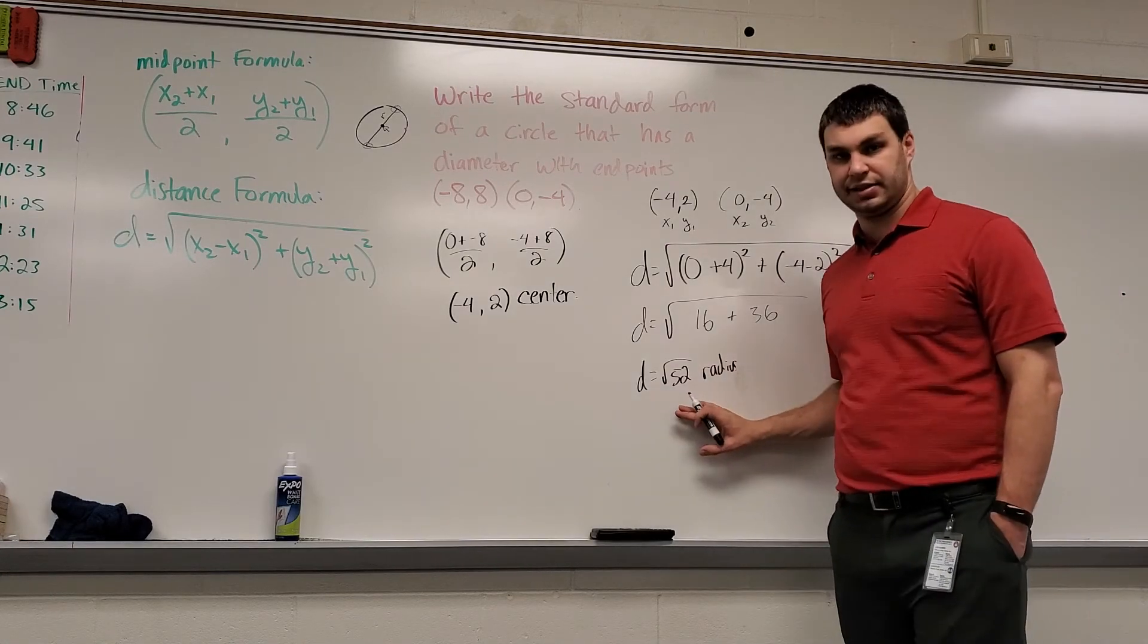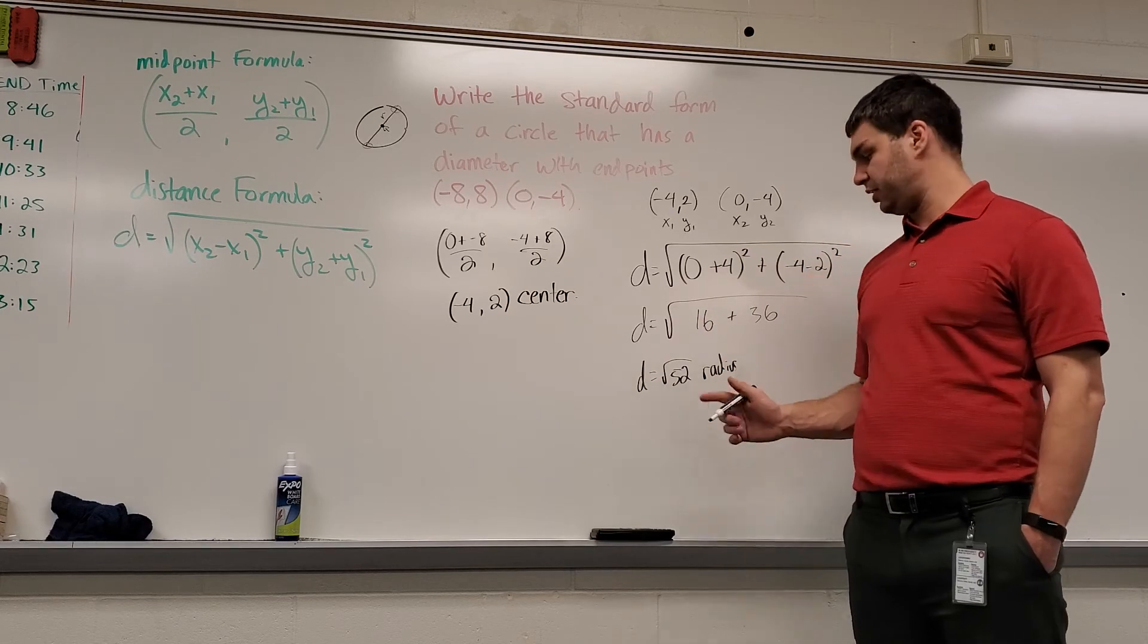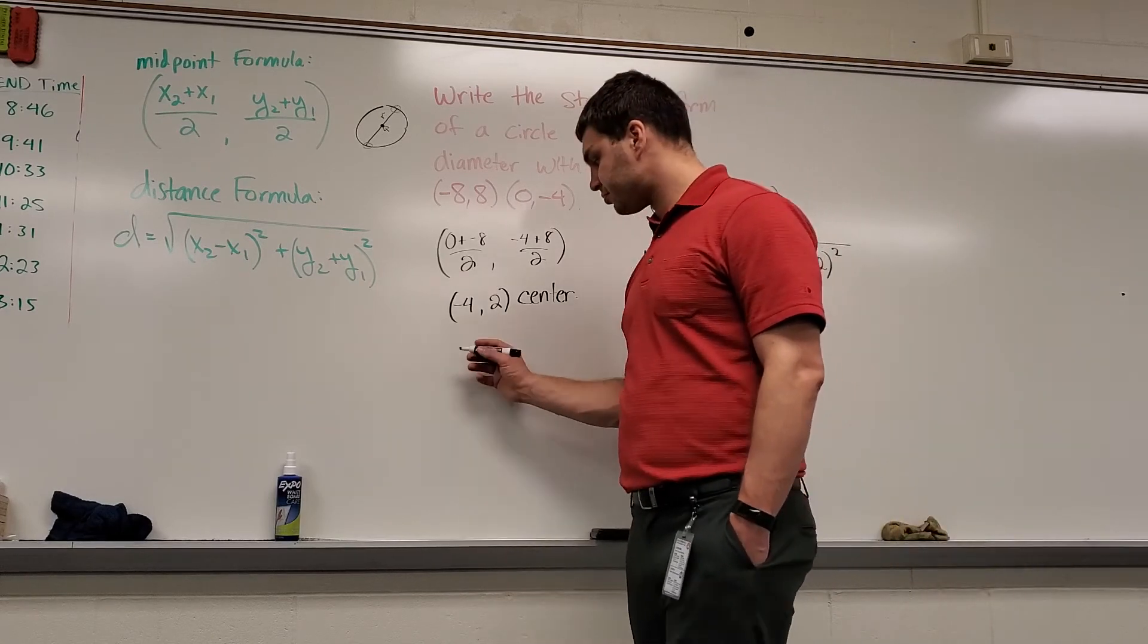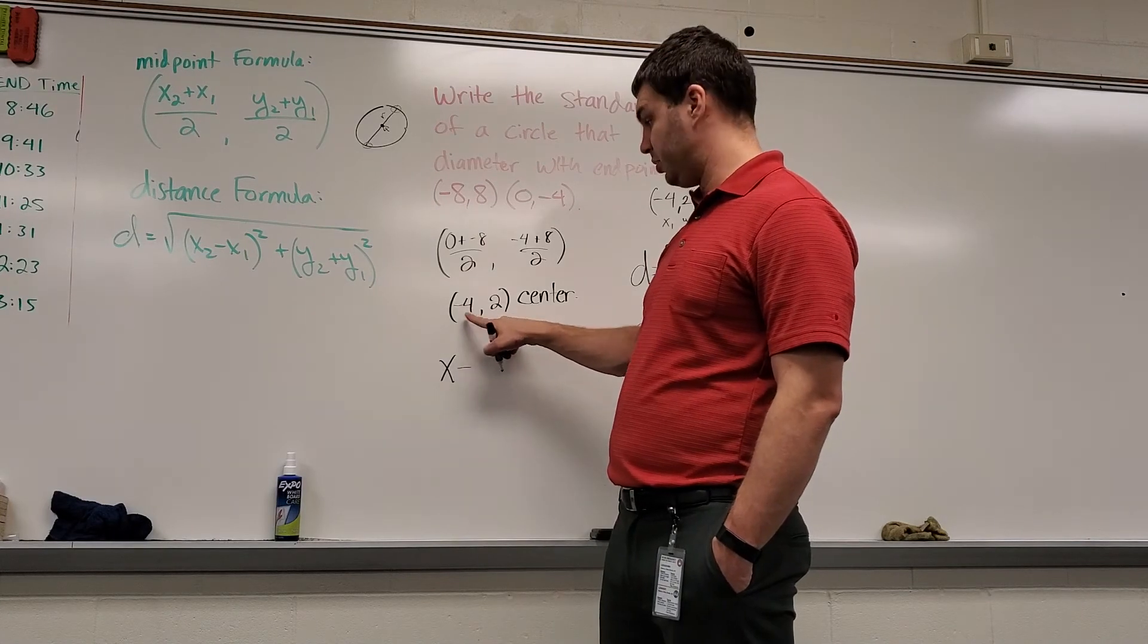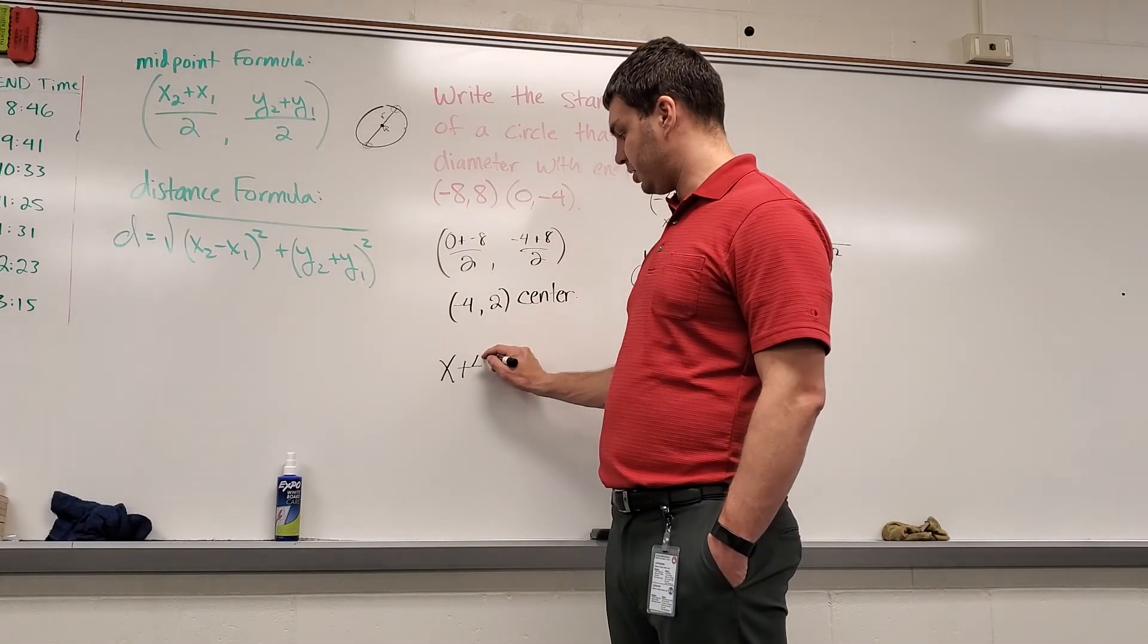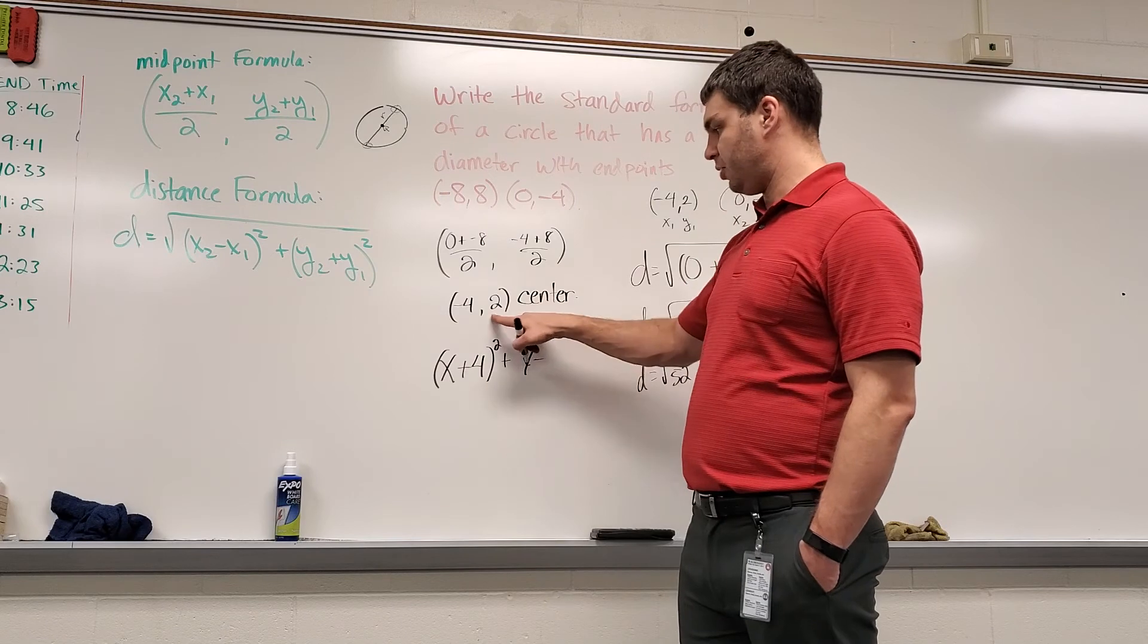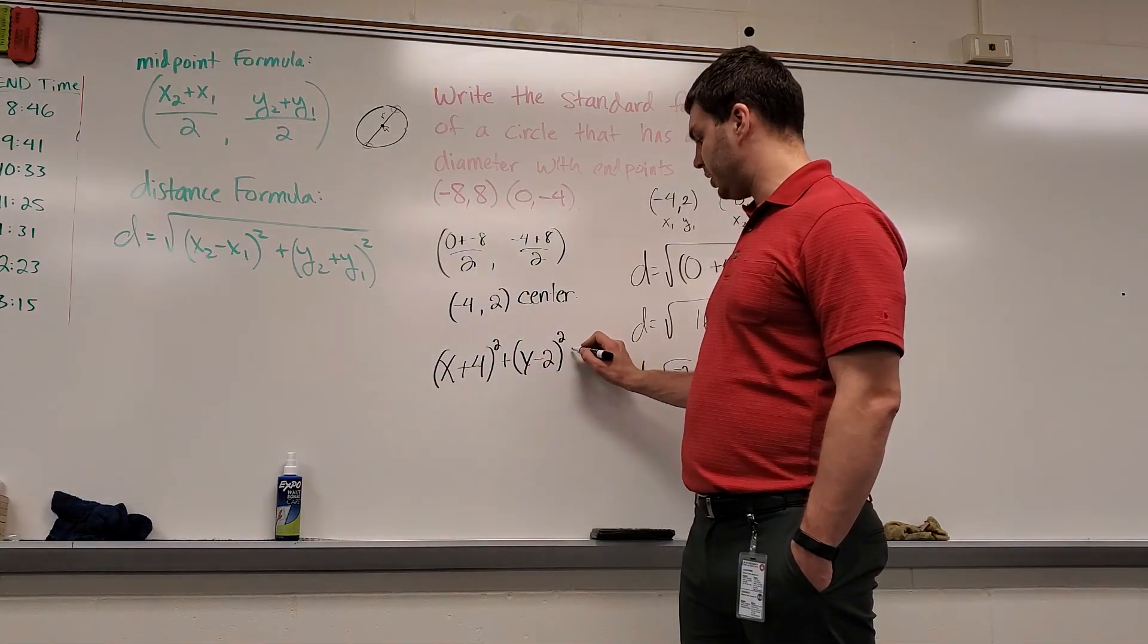And if I have a radius, the standard form of a circle has the radius squared. So eventually we're just going to square this, and those square and square root cancel. So I'm going to take my center, and we're going to go x minus my x1, or minus the x value of my center. So minus a negative 4 will be x plus 4, quantity squared, plus y minus my y value of the center, which is minus 2, quantity squared, equals...